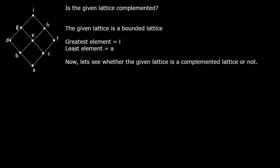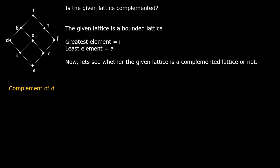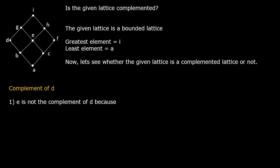Now let us find the complement of a particular element. We need to find whether each and every element has a complement. We start with element d. Consider e first — e is not the complement of d, because the least upper bound of e and d is equal to g, which is not equal to i.